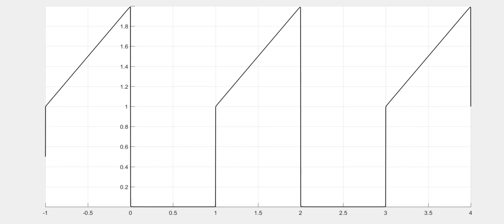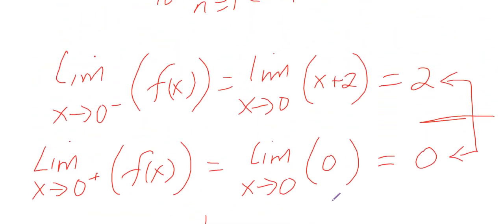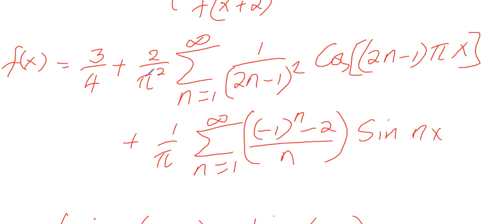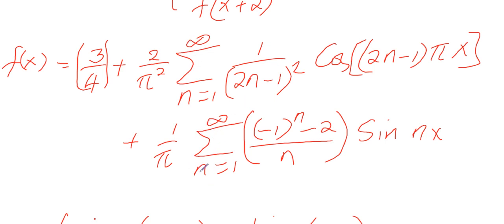Now I want to code this function in MATLAB and plot it for different values of n. For this function, f(x) = 3/4 plus the sum of cosine and sine terms. Since we sum from 1 to infinity, I will consider the first five terms of the cosine series and the first five terms of the sine series.